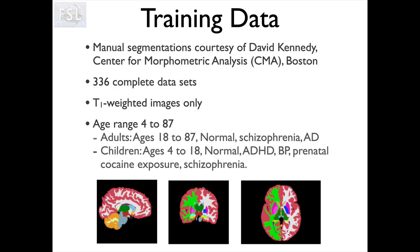That's because it actually uses training data in order to work out how to segment these regions. In the same way that if you're trying to train a person to find these areas of the brain and to segment them, the algorithm also needs to be trained to understand where they are, what they look like, and how to find them.